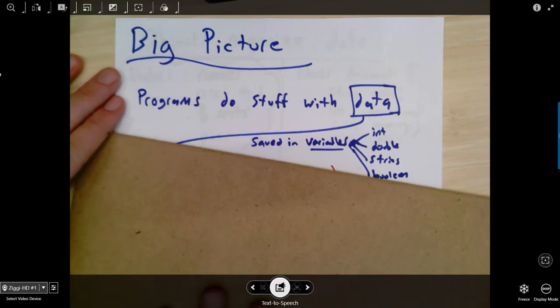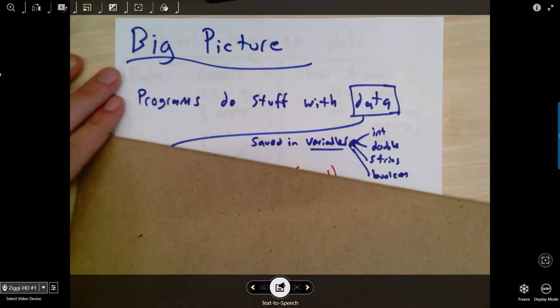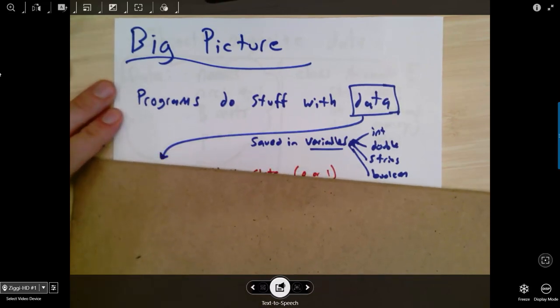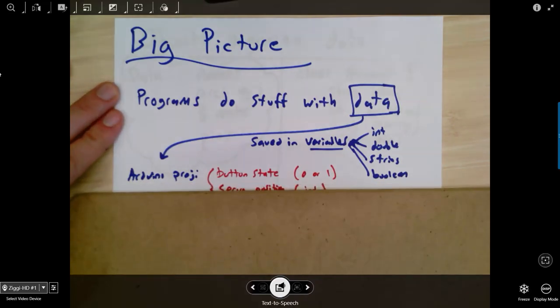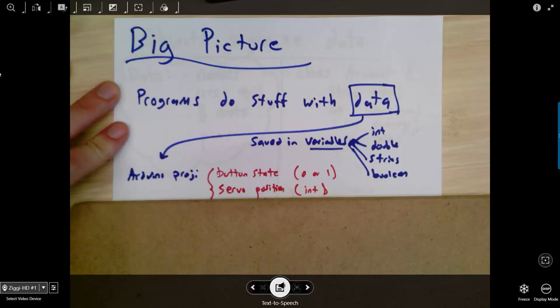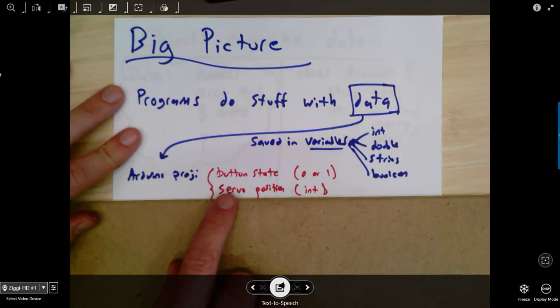So let's think of some examples. Think back to your Arduino projects. Think about what kinds of information did you store inside variables there? And here's what third block said: we had button states and that was an int, 0 or 1 - is the button being pressed right now? For people who had servos, you needed a variable for the servo position and that was an int. There are other examples as well. So that's the kind of data that our program used for Arduino.